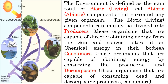The environment is defined as the sum total of biotic, which is living, and abiotic, which is non-living, components that surround any given organism. The biotic components can mainly be divided into producers, which are organisms capable of directly obtaining energy from the sun and converting and storing it as chemical energy — these are plants. Then you have consumers, which obtain energy by consuming the producers, and finally decomposers, which consume dead and decomposing producers and consumers.